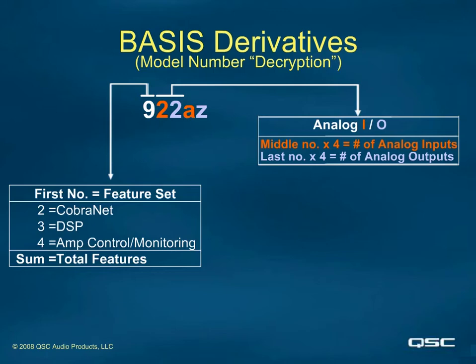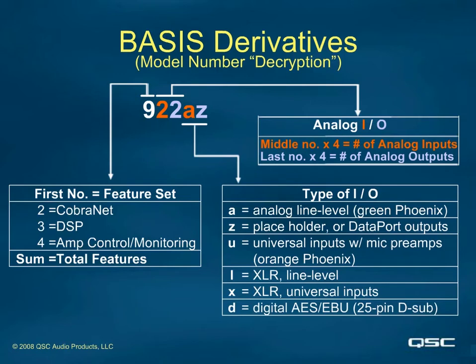Pricing, market research, and common sense, however, showed that the 11 models we are currently making should suffice for nearly every conceivable system. The last two letters of the model name designate the type of IO that the model provides. The first letter in the pair relates to the inputs, while the last letter relates to the outputs. With this full model designation scheme, you need only five characters total to describe each and every unique basis derivative.